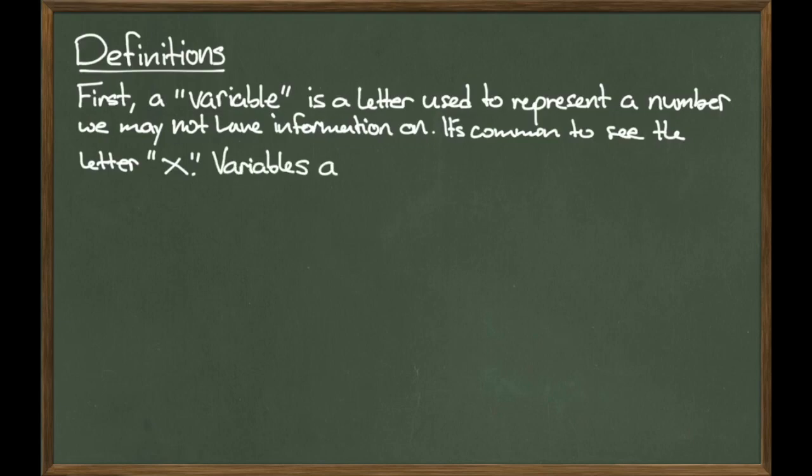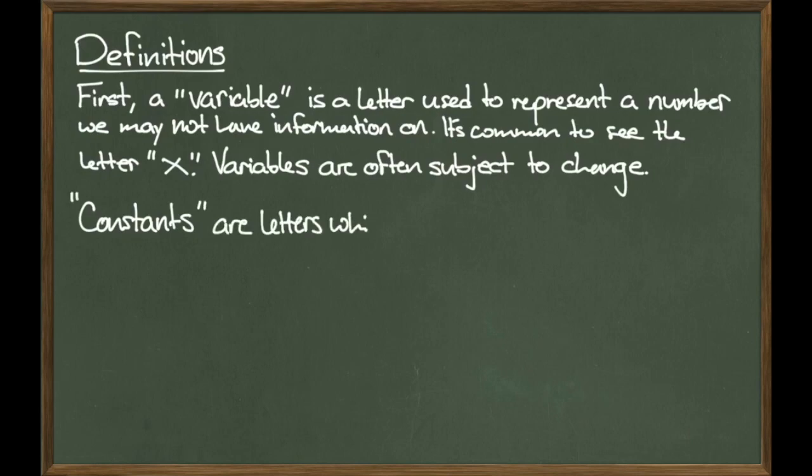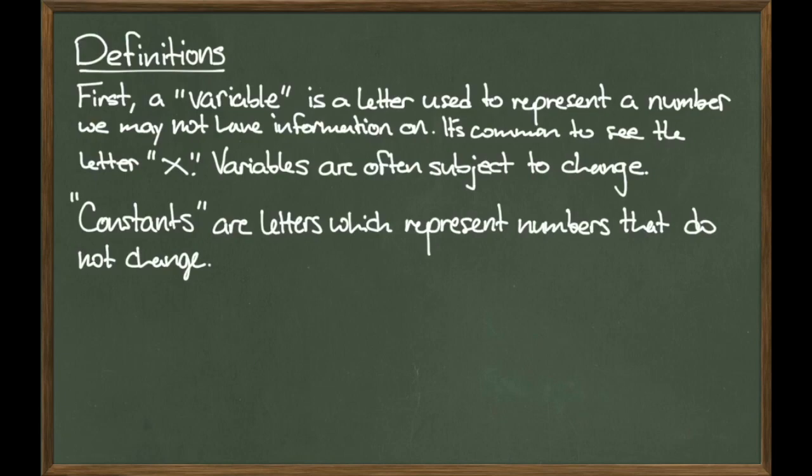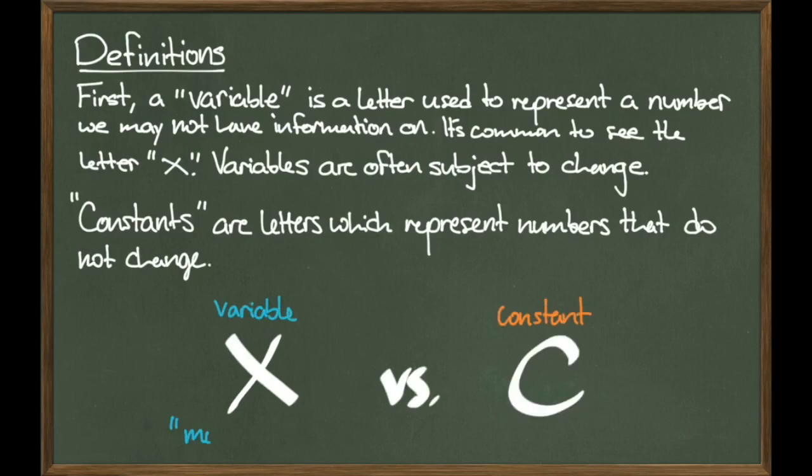The word variable is appropriately chosen because these letters represent numbers that might be subject to change. Depending on the context of the problem that we're looking at, a variable might not have just one value. The next definition we have is something called a constant. Constants are also represented by letters, but these are numbers which are not subject to change. This is why we call them constants. So if I have the letters X and C, where X is a variable and C is a constant, you can think of X as a moving part where C is a fixed part.